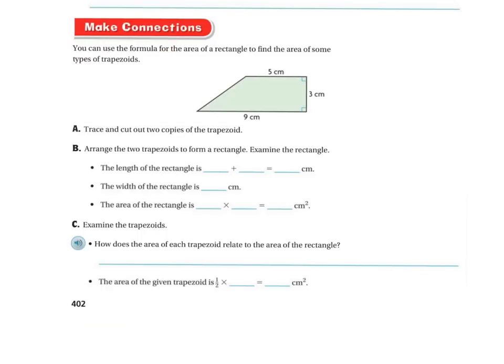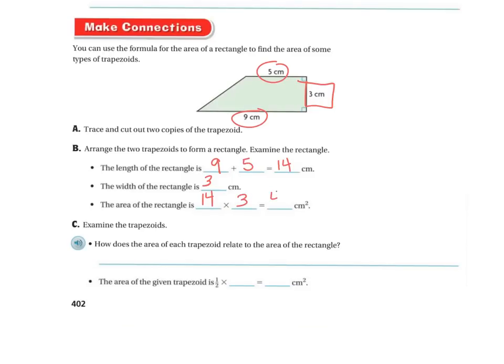Let's make connections. You can use the formula for the area of a rectangle to find the area of some trapezoids. Arrange the two trapezoids to form a rectangle. The length of the rectangle is 9 plus 5, which equals 14 centimeters. The width of the rectangle is 3 centimeters.